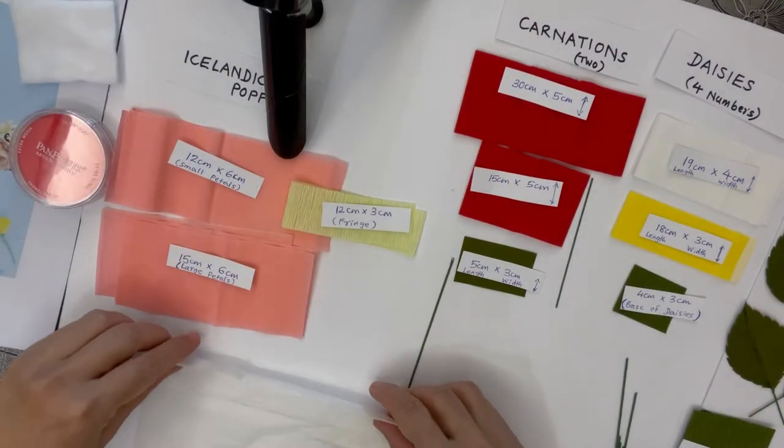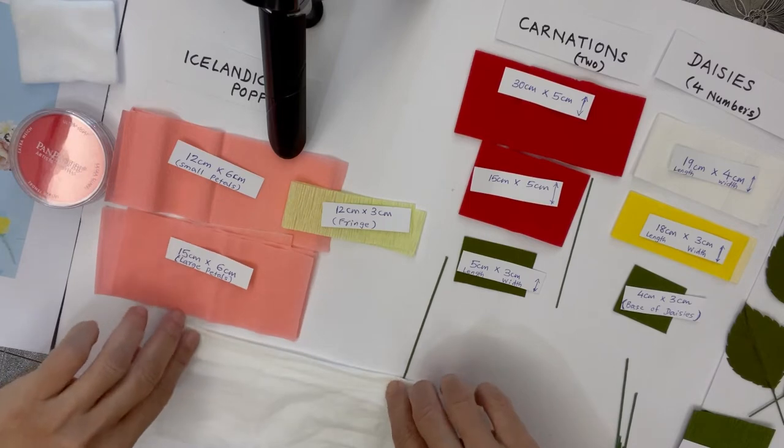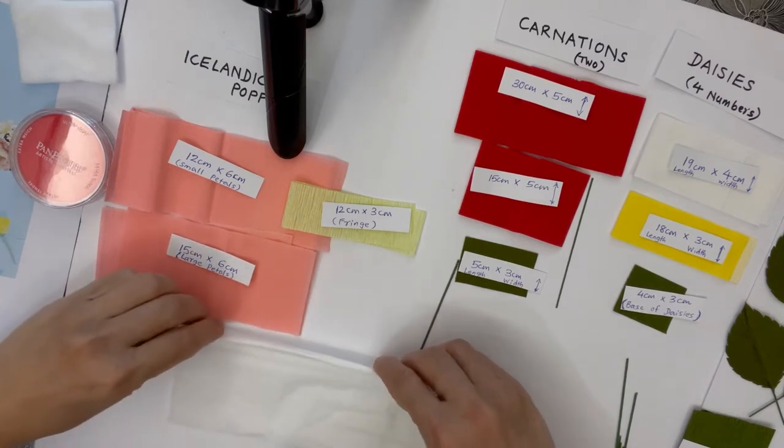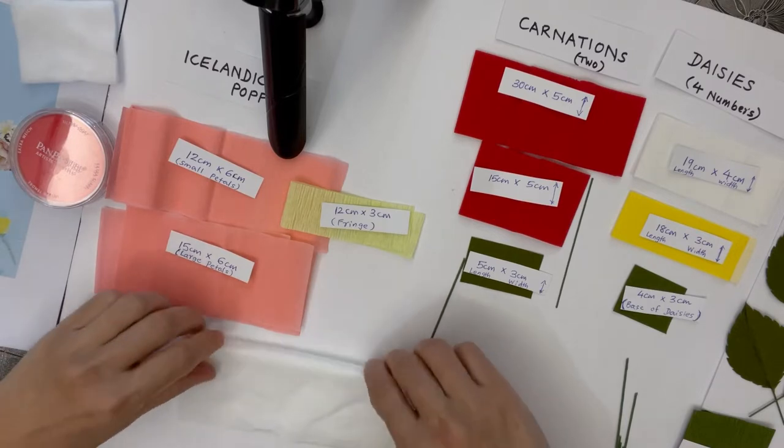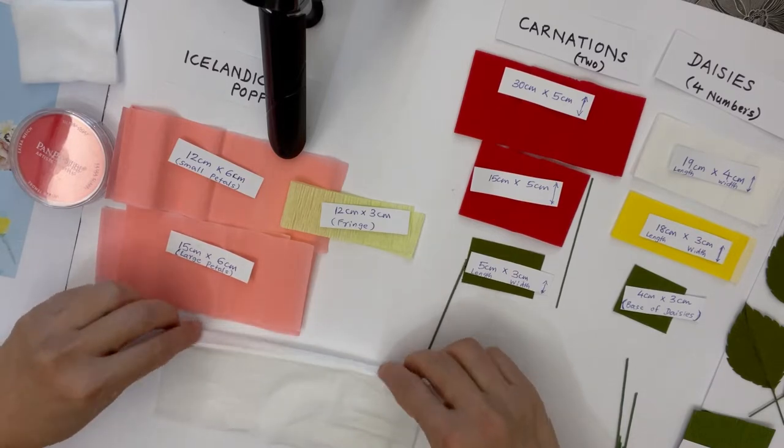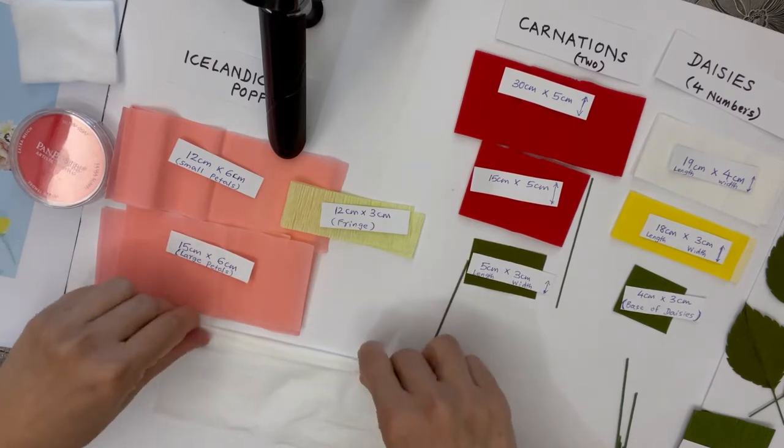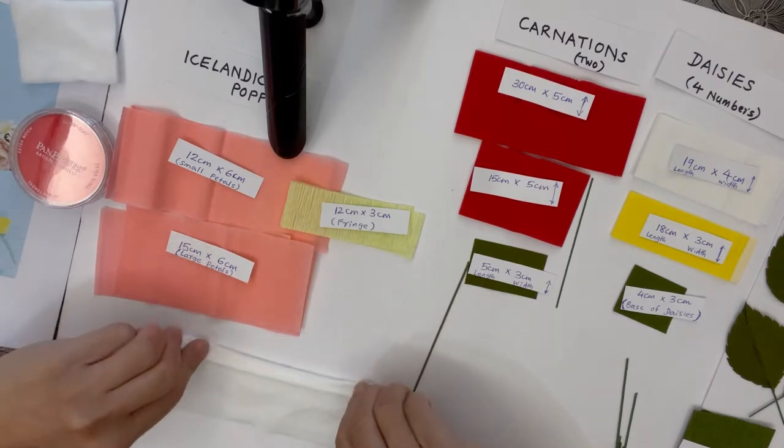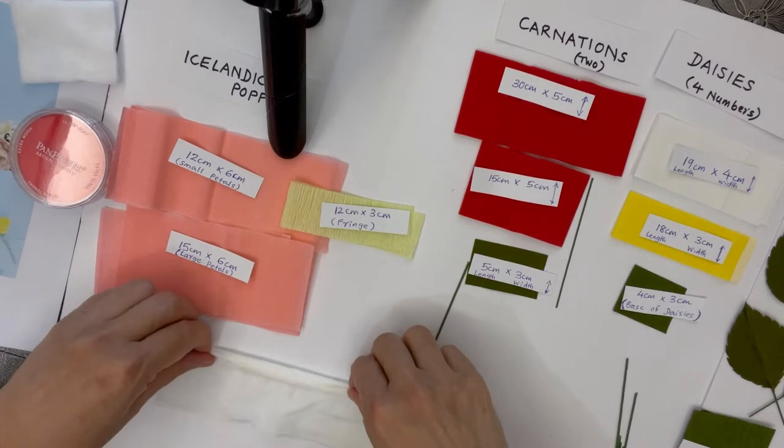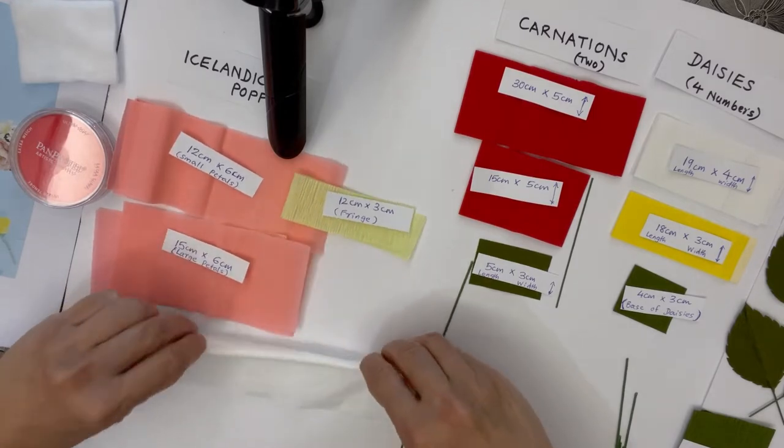Hi, I'm Smita from The Paper Bloom Singapore. Today I'll show you how to make the center for the Icelandic poppies. I'm using facial tissue that I've cut in half and folding it into a thin strip.